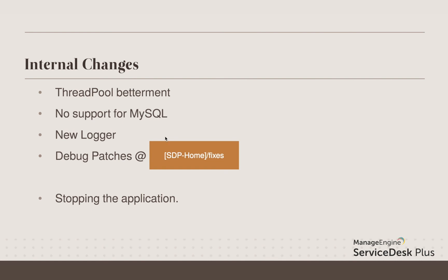The last change is about stopping the application. Earlier, when you stopped the application, a message would appear saying the command has been posted to the server and the application will stop soon. Now that message is written to a file whose name contains the word shutdown along with the year, date, and time at which the shutdown was initiated.